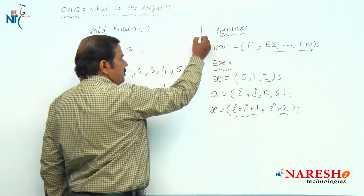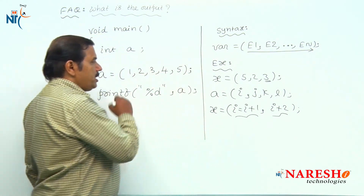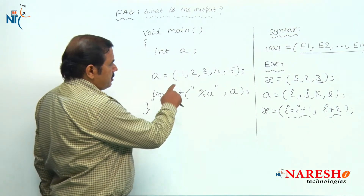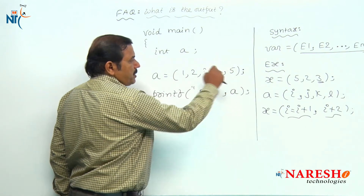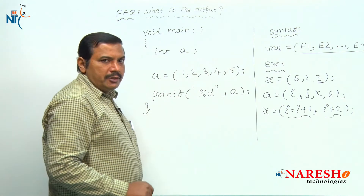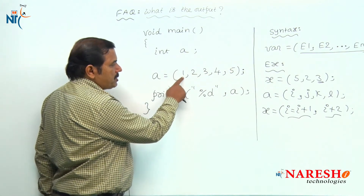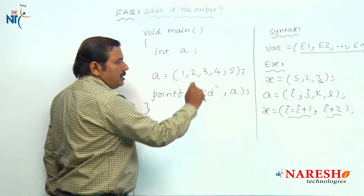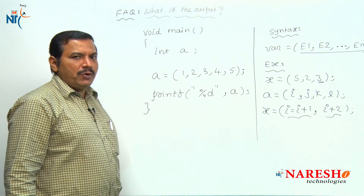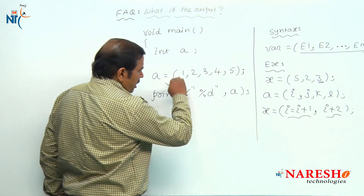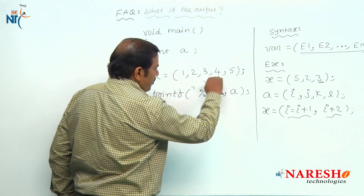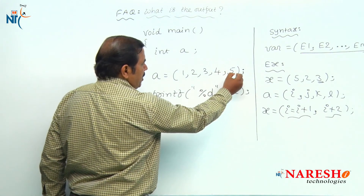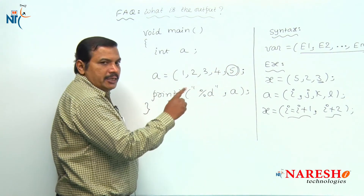Now let us come to this question. In this question, there are five expressions. The value of the first expression is 1, the second is 2, and so on. The last expression value is 5. All these are evaluated from left to right. The rightmost expression value is the final result, which is 5.